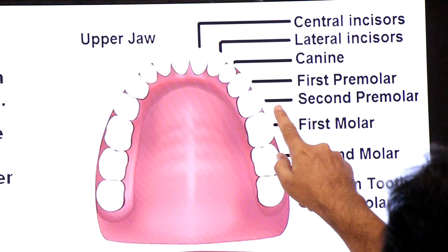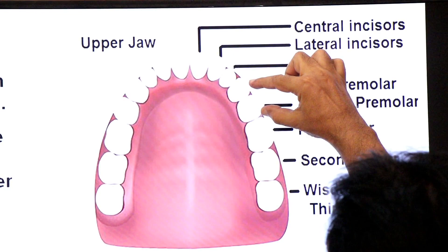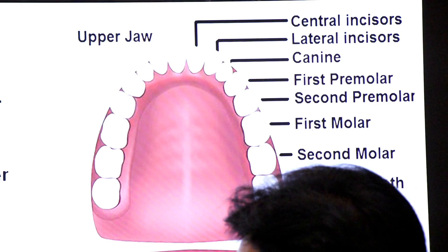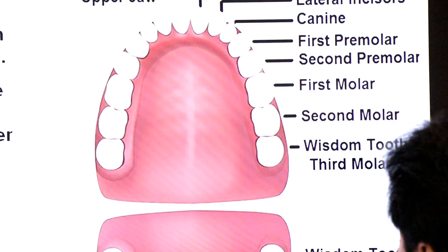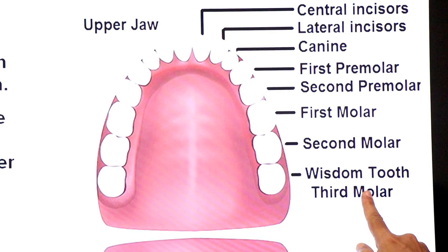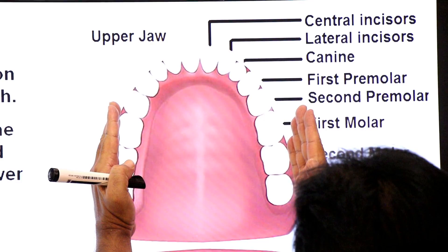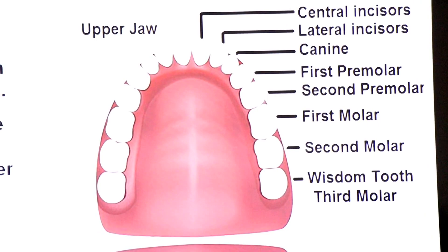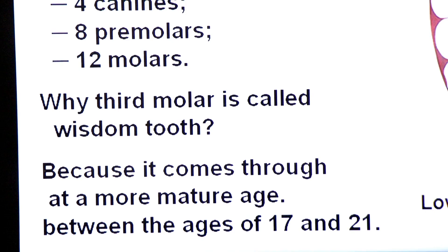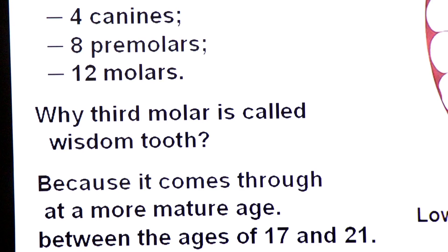For the molars, each half of the upper jaw has a first molar, second molar, and third molar (wisdom tooth) — that is 3 molars per half, 6 in the upper jaw and 6 in the lower jaw, totaling 12 molars. The third molar is called the wisdom tooth because it comes through at a more mature age — between 17 and 21 years.